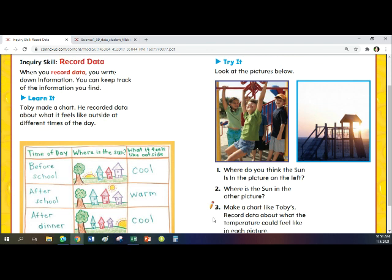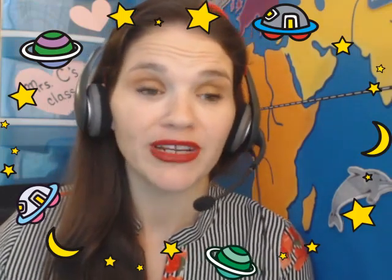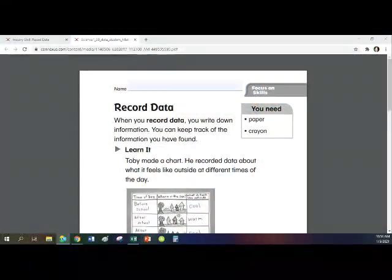Number three says, make a chart like Toby's. Record data about what the temperature could feel like in each picture. So now you're going to record data too, using the information that we just learned. Now there's a worksheet and I want you to make sure you download it and print it so you can fill it out and turn this into your teacher. Here's what it should look like.